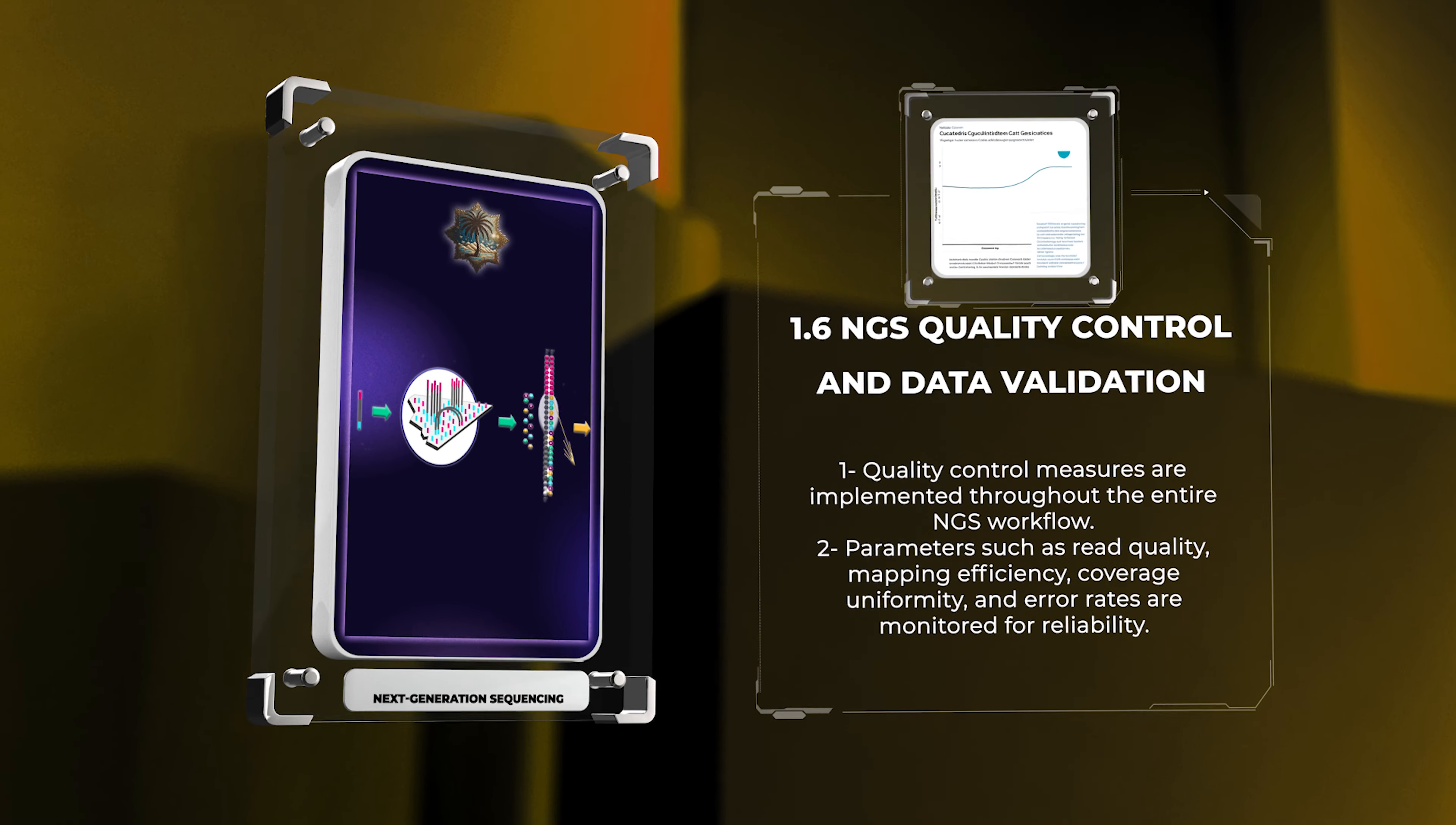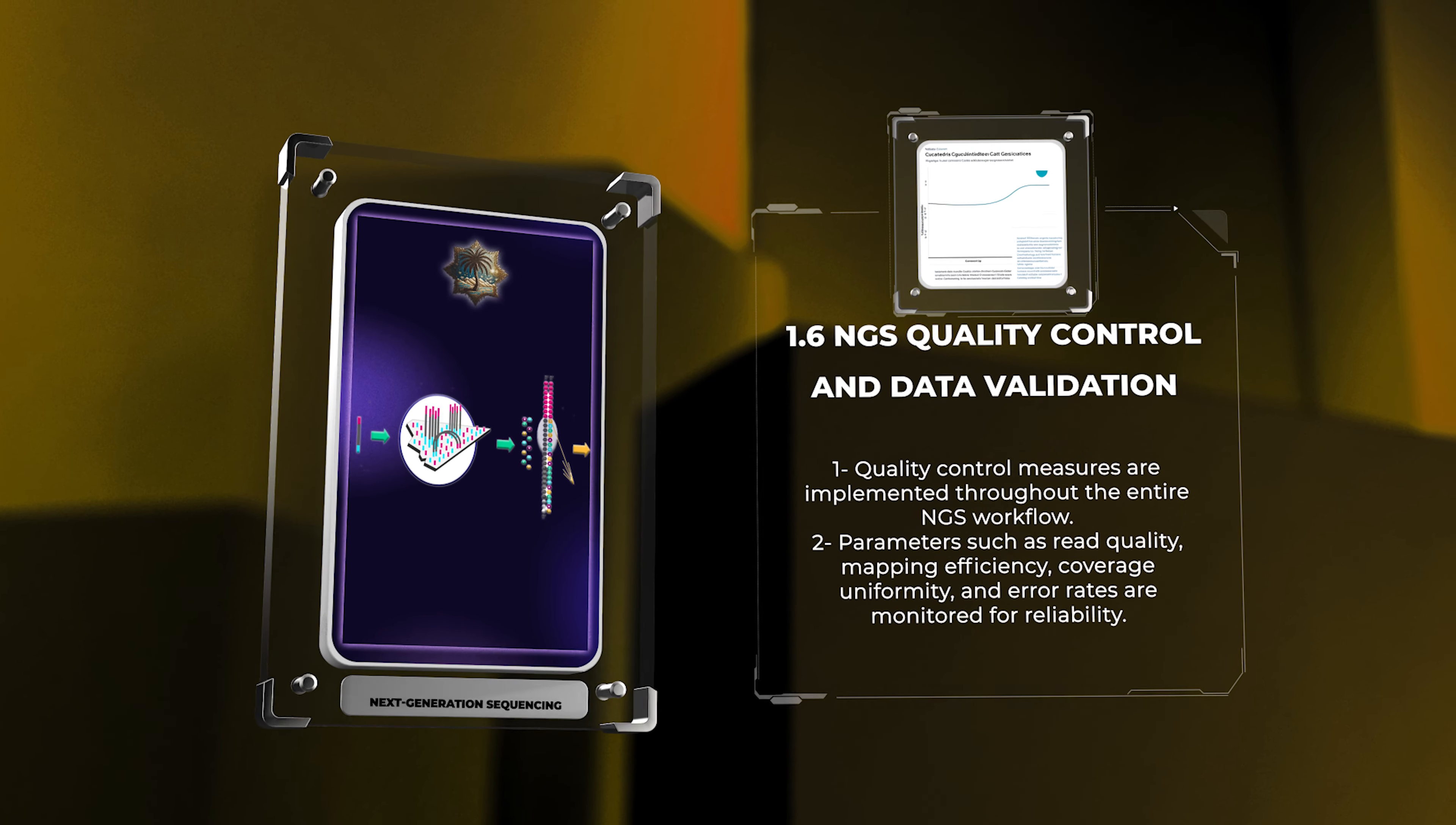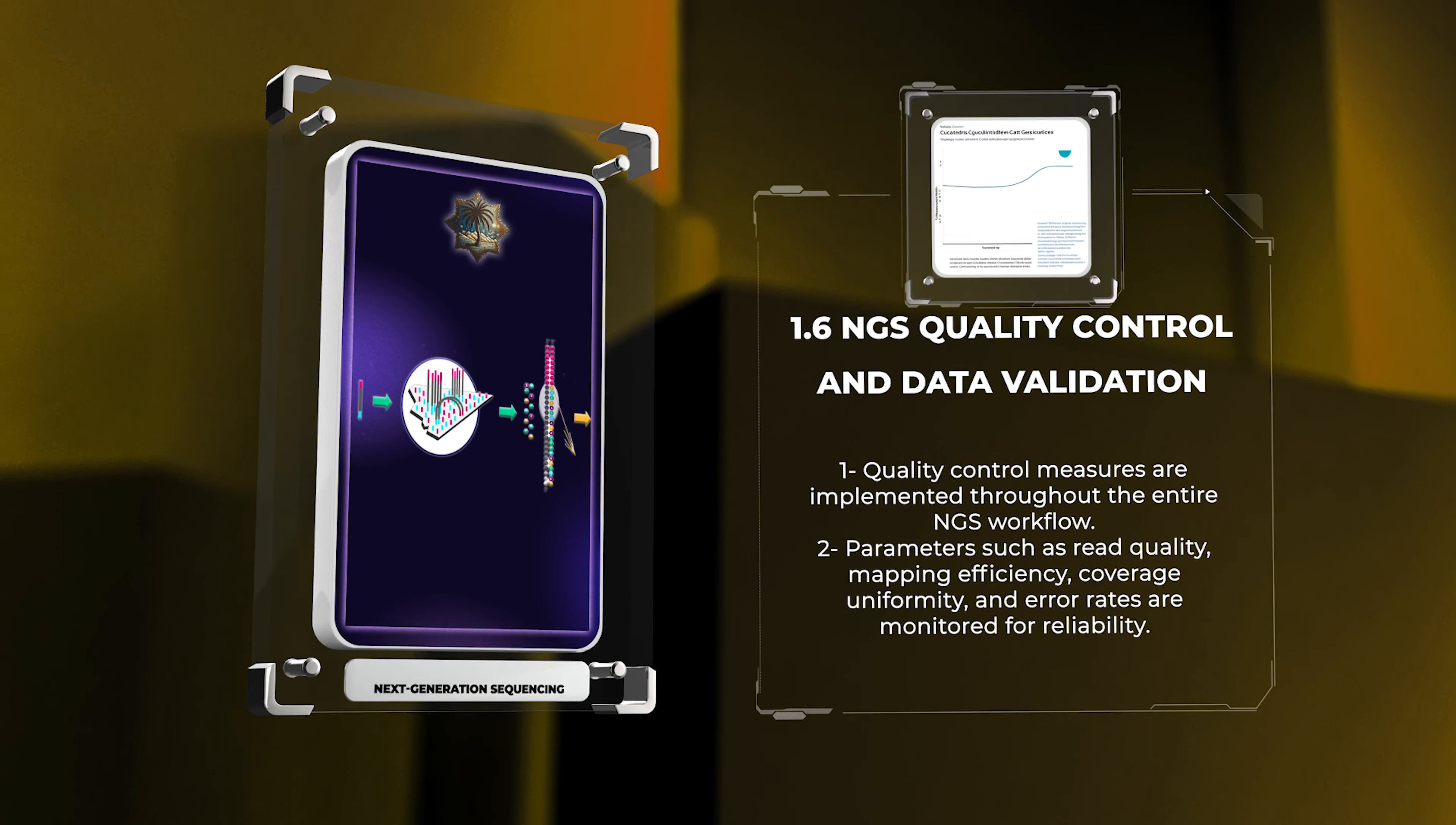Parameters such as read quality, mapping efficiency, coverage uniformity, and error rates are monitored to assess the reliability of the generated data. Various statistical methods and quality control metrics are employed to validate the accuracy and reproducibility of the results.